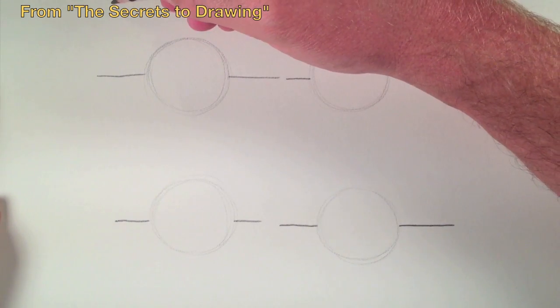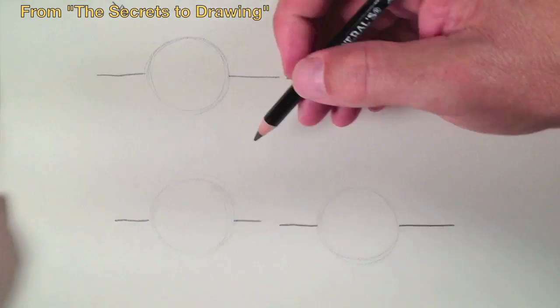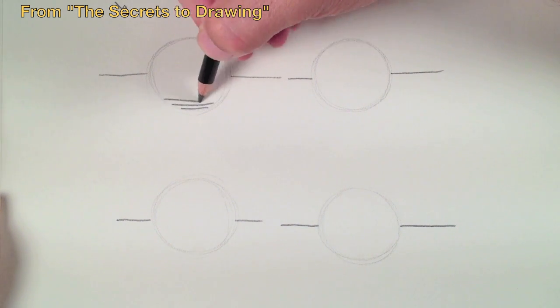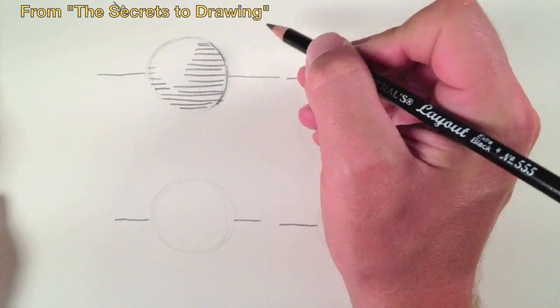This is what I mean. Let's take four spheres, for example, and let's say they all have the same light source. In the first sphere, I'm going to create cross contour lines to indicate shadow on the sphere.